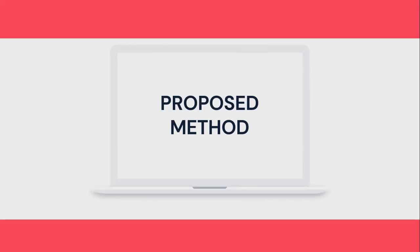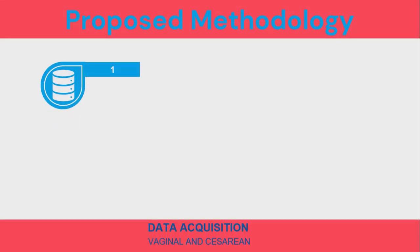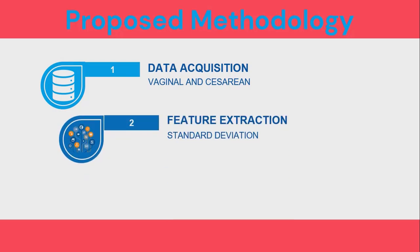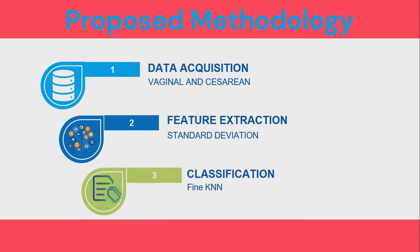The methodology behind classifying the CTG signal as vaginal or caesarean involves three steps. The first step is data acquisition of both classes — vaginal and caesarean — which is the CTG data. The next step is feature extraction from the dataset, and the final step is classification of the data into the two classes.